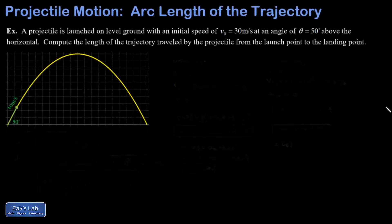In this problem, we're presented with a pretty standard projectile motion scenario. I'm on level ground, and I'm launching the projectile at 30 meters per second at an angle of 50 degrees above the horizontal. But what we're trying to find this time is the actual arc length of the trajectory before this thing lands.